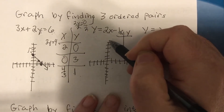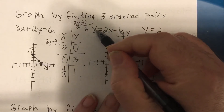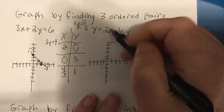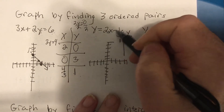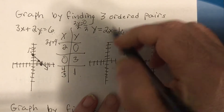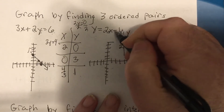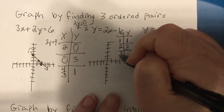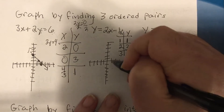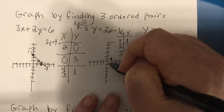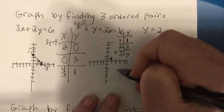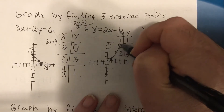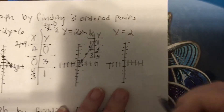If it's solved for y it's called slope-intercept form, and it's easier to just put numbers in for x. Let's put one in — two times one is two, minus one is one. Let's put in two — two times two is four, minus one is three. Let's put in three — two times three is six, minus one is five. So we'd have (1, 1), (2, 3), and (3, 5).